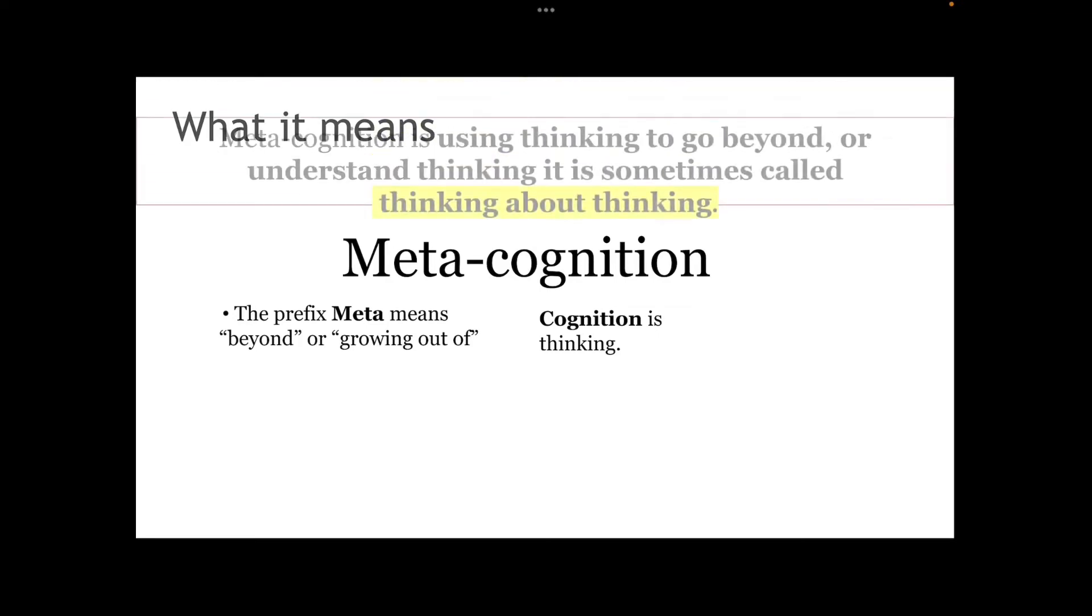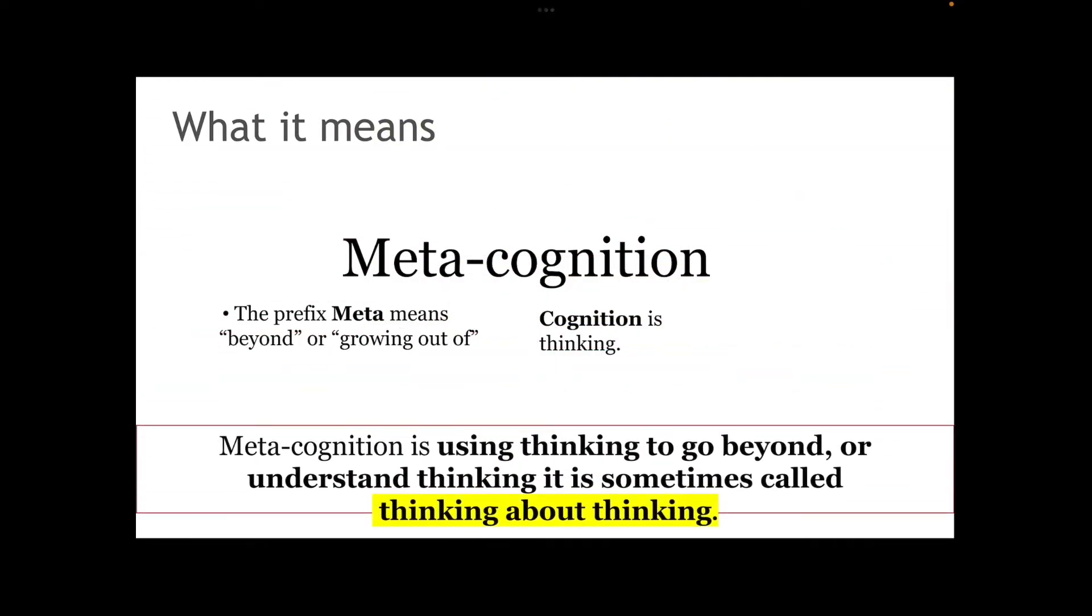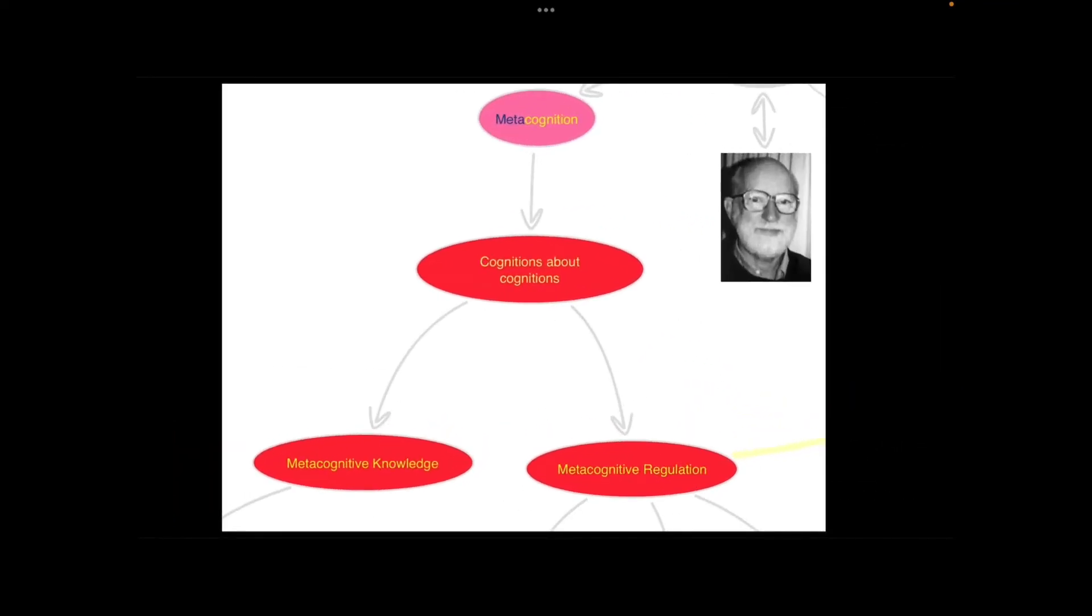So when you put it all together you get a simple definition that metacognition is thinking about thinking, or thinking that goes beyond thinking, or cognitions about cognitions, which is the way that Flavel explained it.